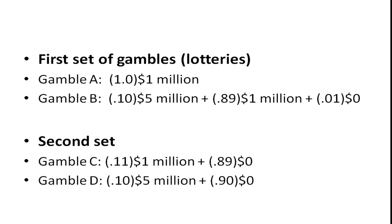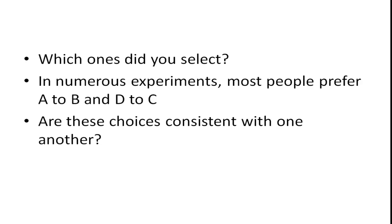What people have found in numerous experiments — not just by Allais, but by other experimental economists — is that people tend to prefer A to B and D to C. And what we want to ask ourselves is: are these choices consistent with one another?